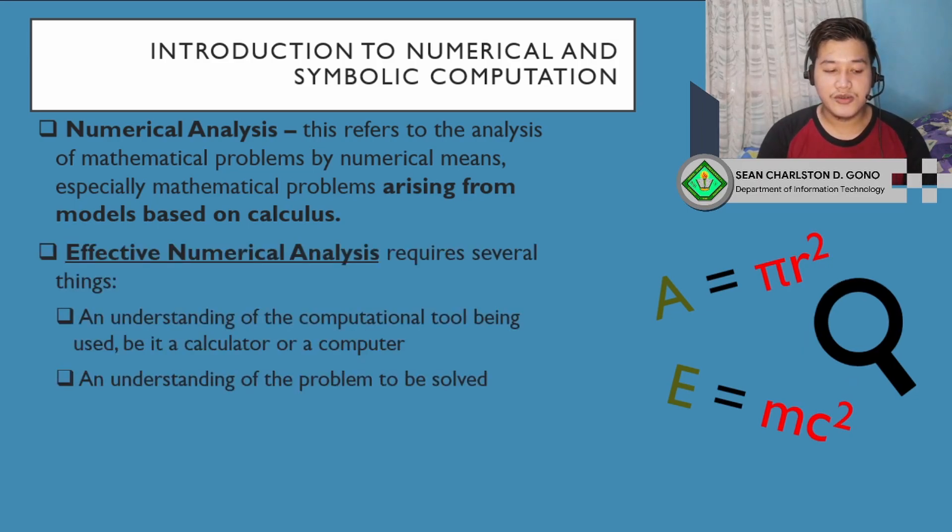In order for us to use effective numerical analysis, we require several things. The first is an understanding of the computational tool being used, be it a calculator or a computer. Because as I've mentioned, we can use computers for this, but they are not that exact. When we use pi on a computer, not every digit of pi is stored. We may use 3.14 or 3.1416, or the computer can only go up to 100 decimal points. Although that is enough for us, it's not enough to fully represent pi or the number we're trying to use. There are limitations on our computers and calculators, so we must understand that limitation.